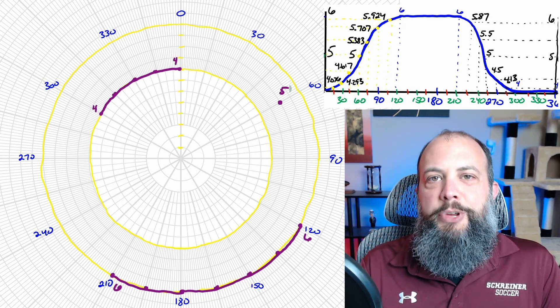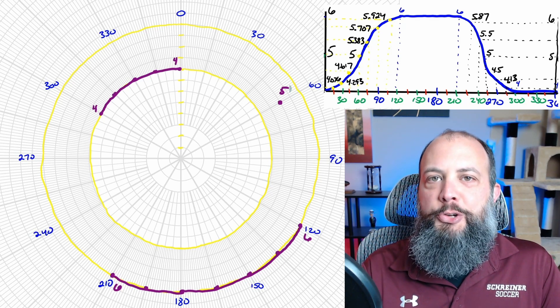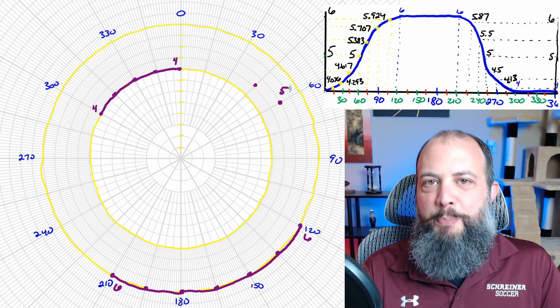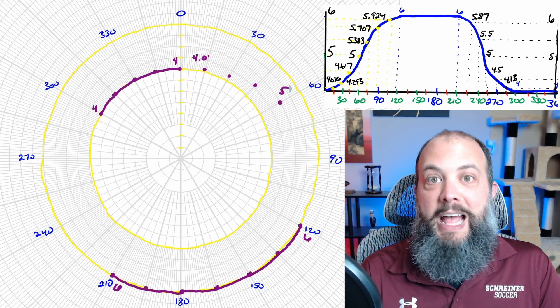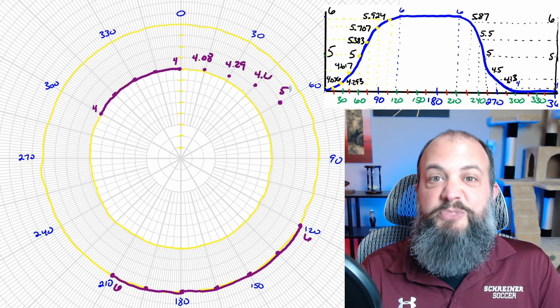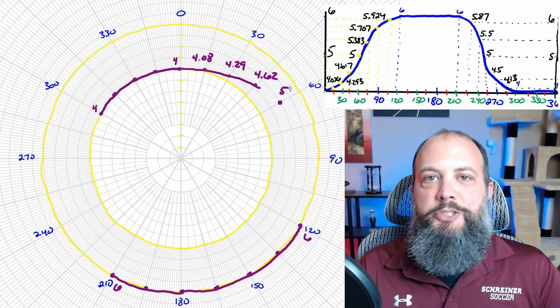So the 60 degree is at five, which is halfway in between the four and six rings. The 45 degree angle 4.62 is just barely outside that ring. The 4.29 is close to halfway in between the two rings and the 4.08 is just barely beyond the lowest one. And just do your best to connect them as smoothly as you can.